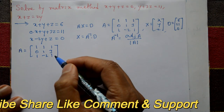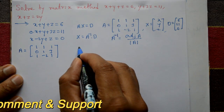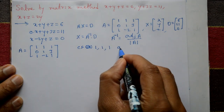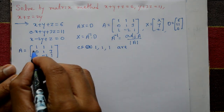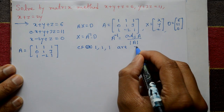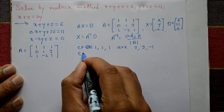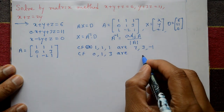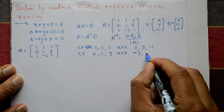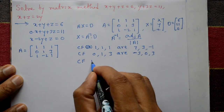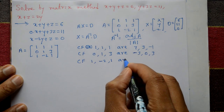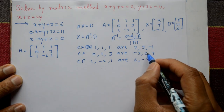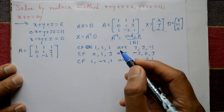Taking matrix A: [1, 1, 1 / 0, 1, 3 / 1, -2, 1]. Now taking co-factors of each row. Co-factor of first row: [7, 3, -1]. Co-factor of second row: [-3, 0, 3]. Co-factor of third row: [2, -3, 1]. Please check the already uploaded video for how to find co-factors.